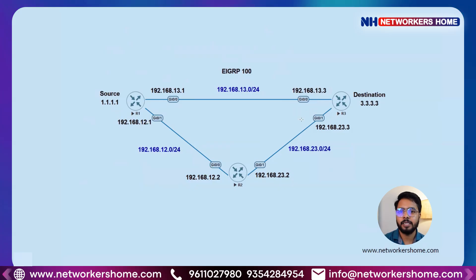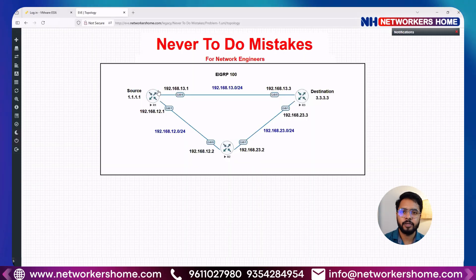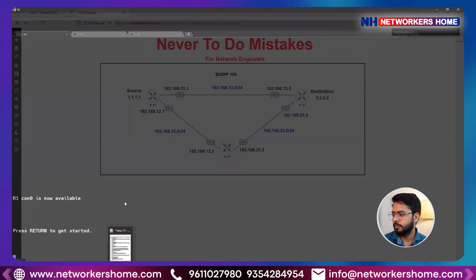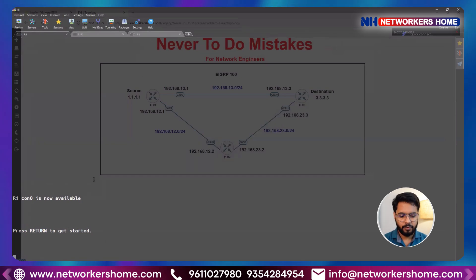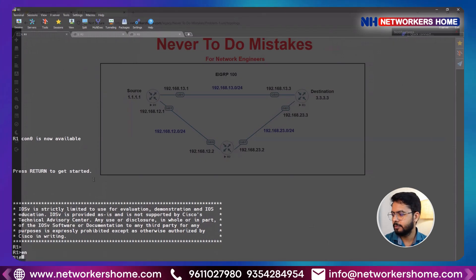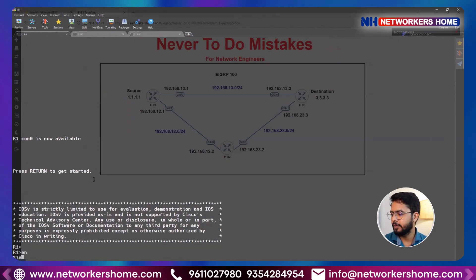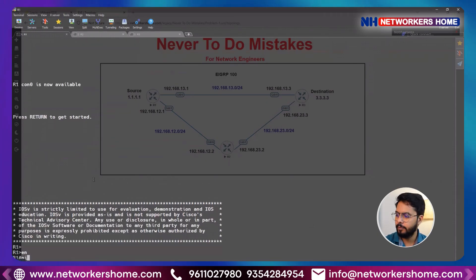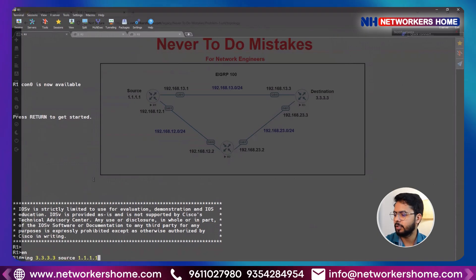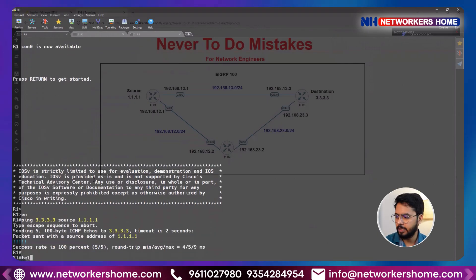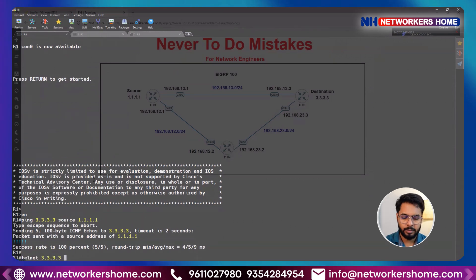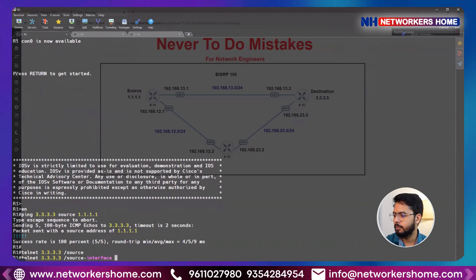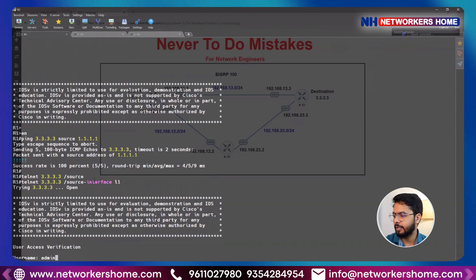If you take that kind of decision without checking, it can put you through tough times. Let me show it practically. Here I have R1, R2, and R3 in the lab. On R1 I'll do enable, then ping 3.3.3.3 using source 1.1.1.1 to test connectivity — I have connectivity. Now I'll remotely manage it: telnet 3.3.3.3 with source interface loopback1, and I log in with username admin and password.